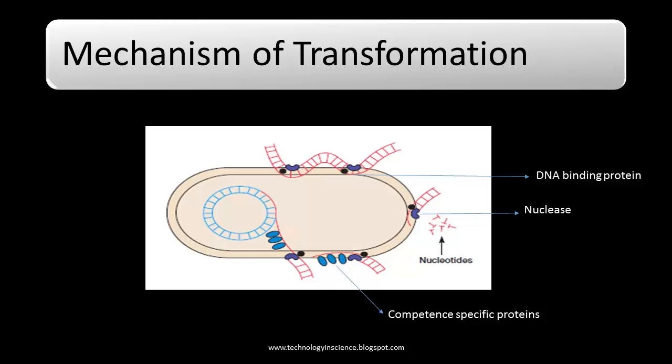The mechanism of transformation has been intensively studied in Streptococcus pneumoniae. A competent cell binds a double-stranded DNA fragment if the fragment is moderately large, and this process is random — donor fragments compete with each other. The DNA is then cleaved by endonucleases into double-stranded fragments of about 5 to 15 kilobases in size.